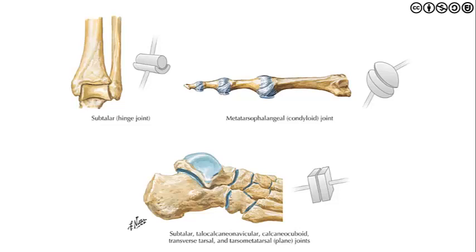It's helpful to recognize the different joint types making up the foot and ankle. The subtalar joint is more of a hinge-type joint, as is the talocrural joint. The metatarsophalangeal joints are considered condyloid joints, following a convex-concave principle with 360 degrees of freedom. The talocalcaneonavicular, transverse tarsals, and tarsometatarsal joints are considered plain-type joints. This graphic illustrates how the mechanics of these various joints may interact.